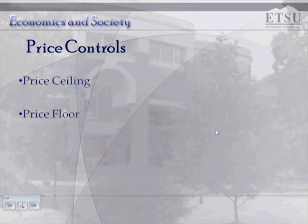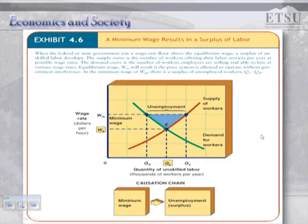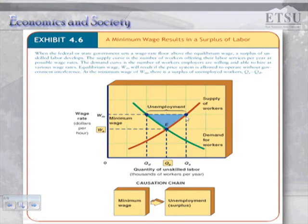A price floor sets the minimum price of a good. Minimum wage is an example of a price floor — it is illegal to sell a good, service, or resource for less than the price floor. If the minimum wage is higher than the equilibrium wage, it prevents the wage from reaching the equilibrium level. When the price floor is above equilibrium, the quantity supplied will be greater than the quantity demanded, resulting in a quantity surplus. In the labor market, more workers are willing to work at that wage than employers want to hire — this is what we call unemployment.